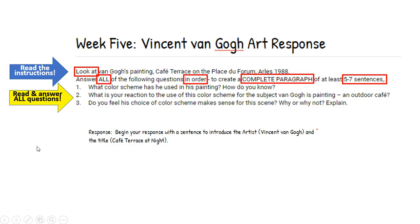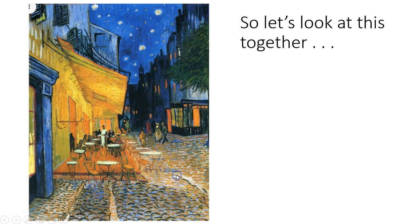The next thing you want to do is read through and answer all the questions. After you've looked at the painting, begin to answer those questions, and we're going to do that together. You always, anytime you're writing about a piece of art, a song, a short story, a novel — anything — you always want to introduce the artist or author and the title, so that if that paragraph is taken out of context, the reader will know what the topic was. Pretend that paragraph is going to function as a little piece of writing all by itself.